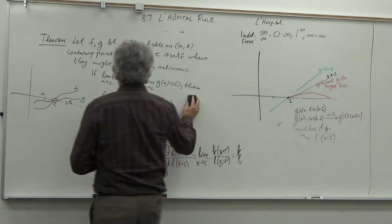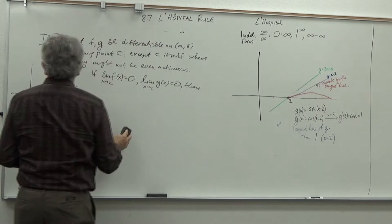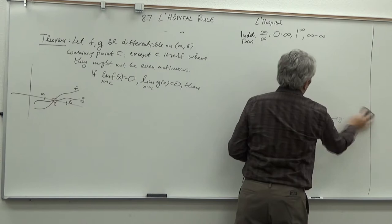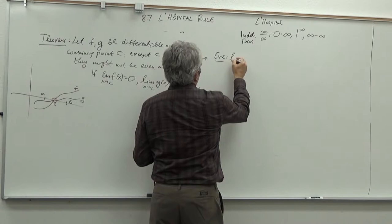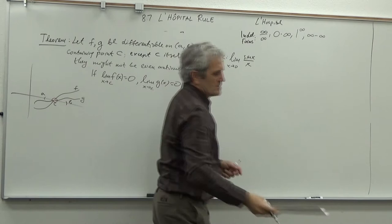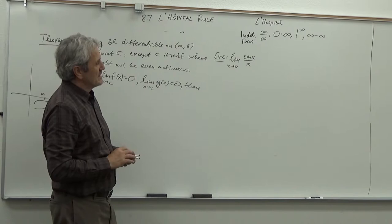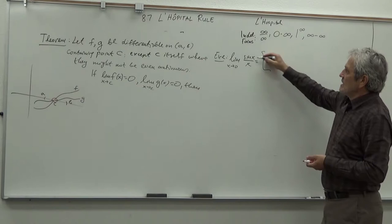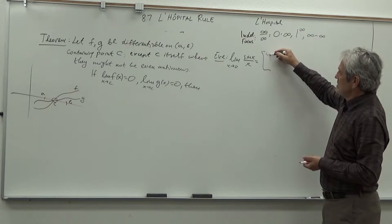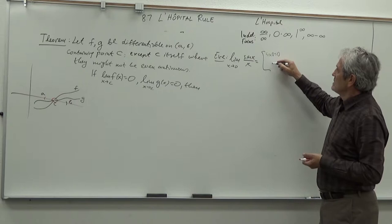Let's see how this theorem helps us calculate limits that would otherwise be much more complicated. For example, the limit as x → 0 of sin(x)/x — you may remember this from Calculus 1. Always first check: when you plug in, sine(0) = 0 on top, and x = 0 on the bottom. So we have 0/0, which means it is okay to use L'Hôpital's rule.